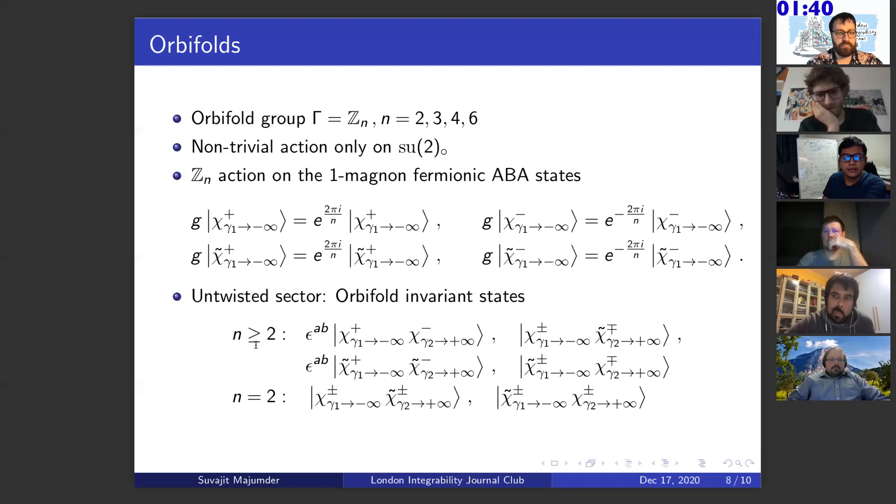Using this action, now we can write down the orbifold invariant states. And for N equals 2, 3, 4, 6, all of those, we have a bunch of these orbifold invariant states. However, for N equals 2, there is an enhancement because G squares to 1, and we have some further states like this. This is the untwisted sector.